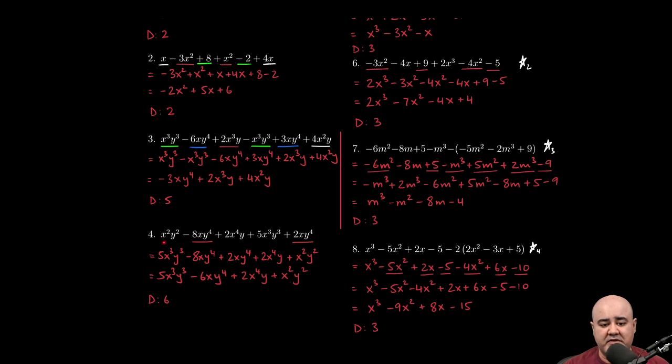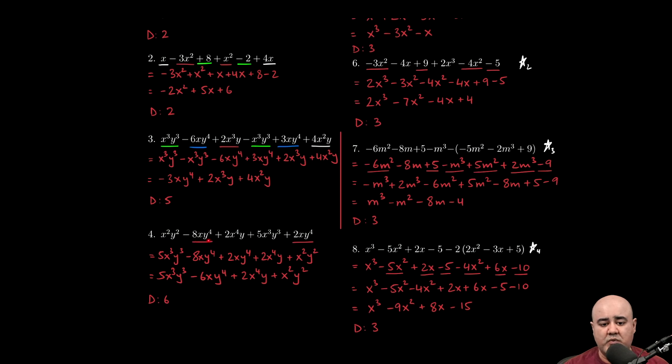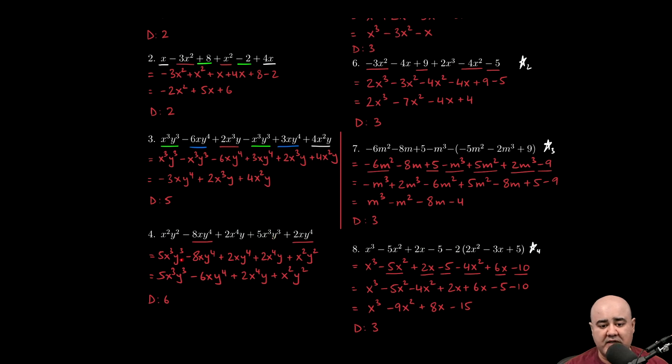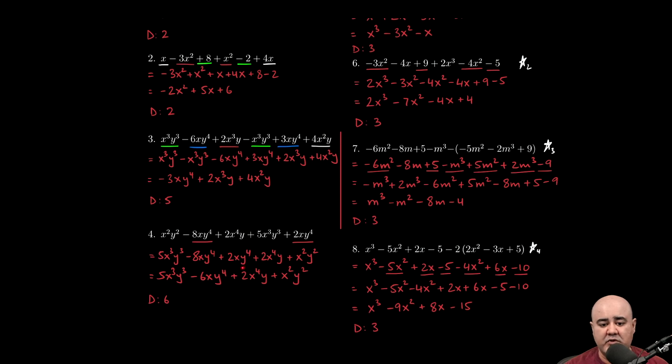One last example here. x squared, y squared degrees 4. xy to the fourth degrees 5. x to the fourth y degrees 5 again. x cubed, y cubed degrees 6. And then finally, xy to the fourth degrees 5. We're going to write again all the degrees in descending order. So 5x cubed, y to the third. That's the highest exponent or the sum of the highest exponents. That goes first. Minus 8xy to the fourth degree 5. Plus 2xy to the fourth degree 5. Plus 2x to the fourth y degree 5. And then x squared, y squared degree 4.